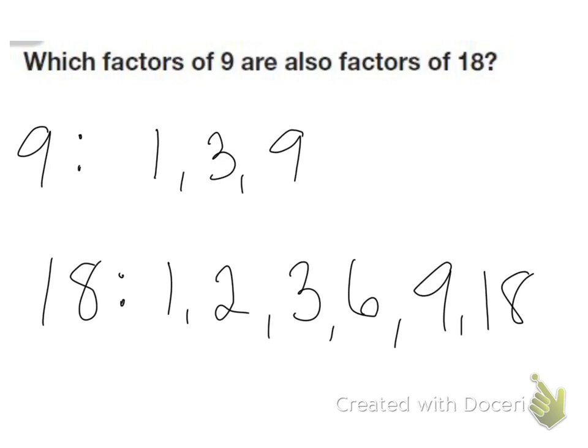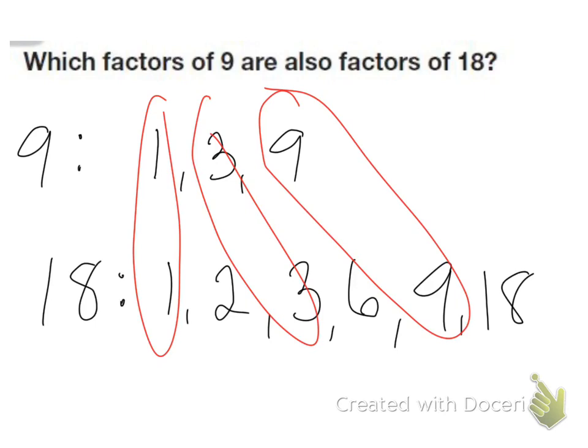There we go. So we say that 1, 3, and 9 are all common factors. They're common factors because both 9 and 18 share those factors.